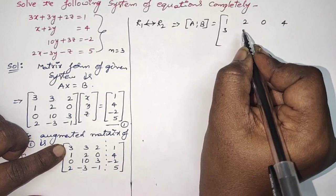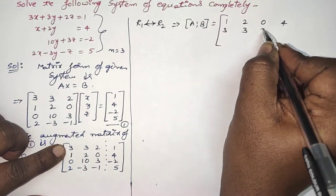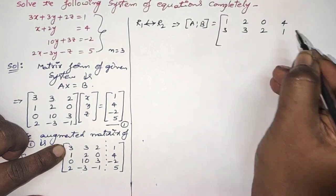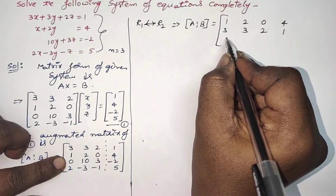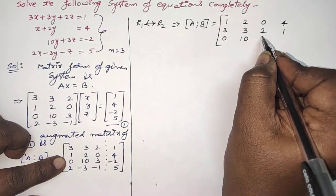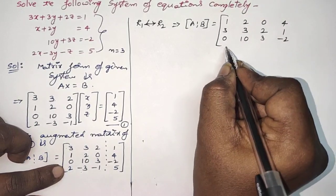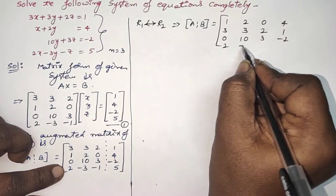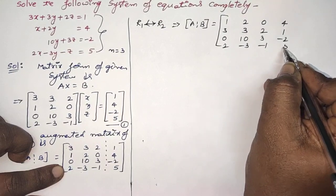The second row becomes 3, 3, 2, 1. The last two rows remain the same: 0, 10, 3, minus 2, and 2, minus 3, minus 1, 5.